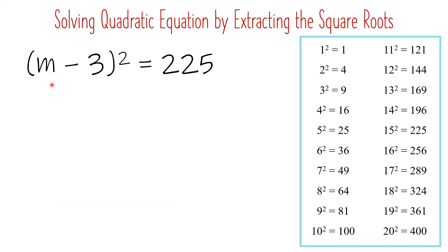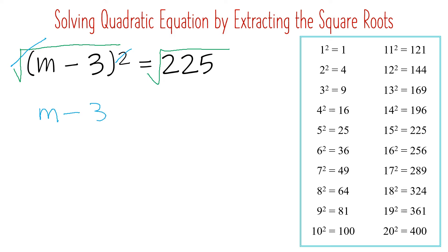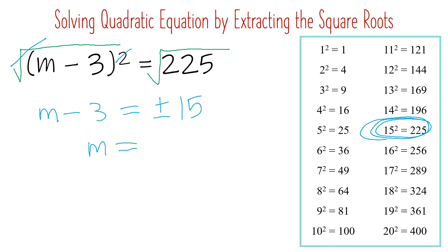How about this one? Since the binomial is enclosed in parentheses with an exponent of 2, we cannot transpose negative 3 to the other side. Instead, we may start extracting the square root immediately. Get the square root of both sides. Since we are getting the square root of a squared binomial, we may just cancel the radical and the exponent of 2. Now we only have m minus 3 on this side. Then get the square root of 225, which is positive and negative 15. But this is not yet the final answer — since we still have the term negative 3, we need to transpose it to the other side, where it becomes positive 3.